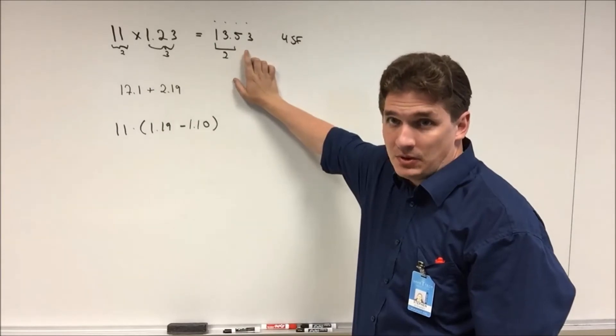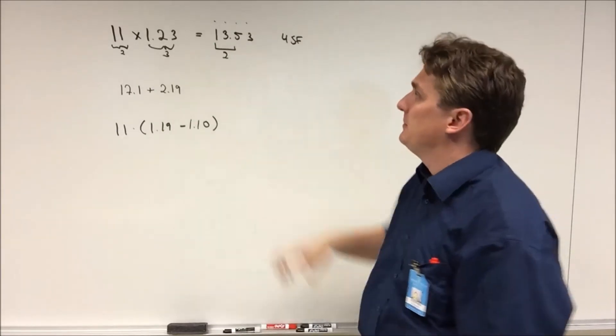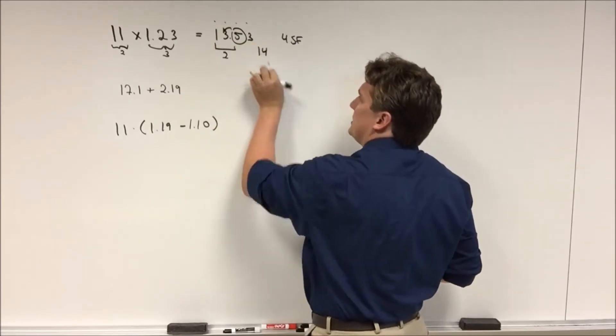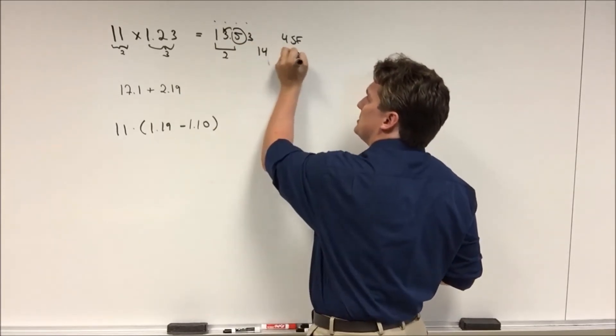Since five is our last number after our significant figure, we're going to round up and this will give us a final answer of 14. And this finishes us with two significant figures.